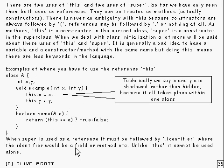When super is used as a reference, it's got to be followed by a dot and an identifier. Where the identifier is either a field or a method, etc. Unlike this, you cannot use it alone. You can't use it by itself, just like that. Also, you can't do something like super dot super. That's not allowed either.